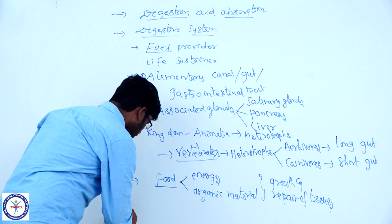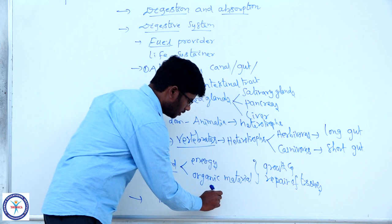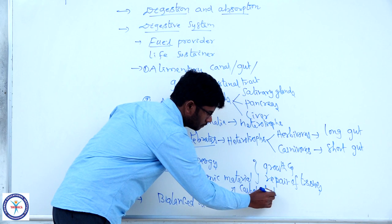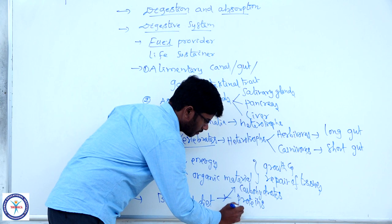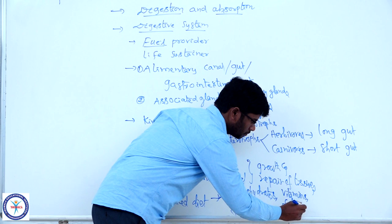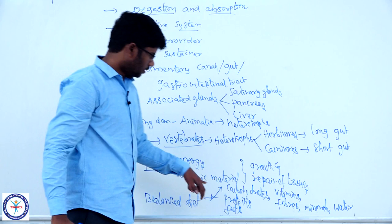Now I would like to discuss about balanced diet. What is a balanced diet? A balanced diet is the diet which contains all the requirements in sufficient manner, particularly carbohydrates, proteins, fats, vitamins, fibers, minerals, and water.